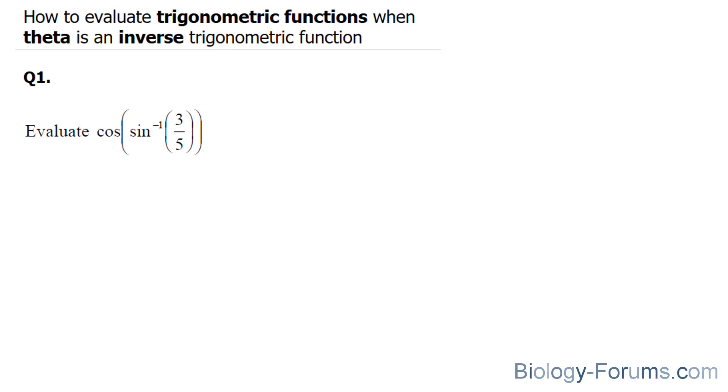Let's start with question number one. This question asks us to evaluate cosine when theta is the inverse sine function of 3 over 5. The technique to tackling this is first to set this as theta. By setting this as theta, we can find the reverse of this by taking sine of both sides. And if we take the sine of this side, you end up with 3 over 5.